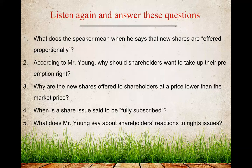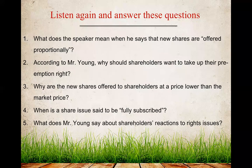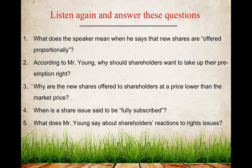This task is about answering questions. There are five questions here. Please focus on key terms used in each question — for example, number one uses 'offered proportionally' and 'pre-emptions,' and number four uses 'fully subscribed.' These are necessary terms used in the conversation. After answering, you may check the answers in the back of your book. If you have difficulties understanding these terms, you can reach out to me and I will give you a clear explanation.